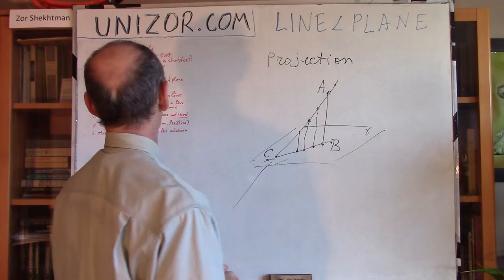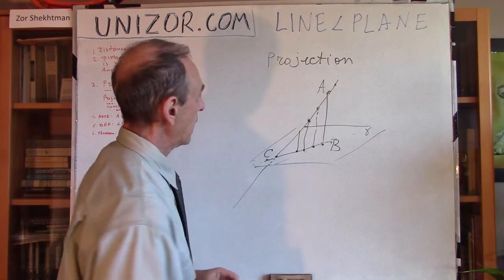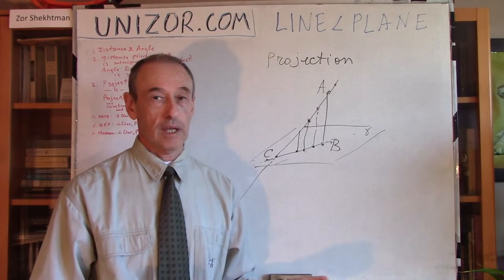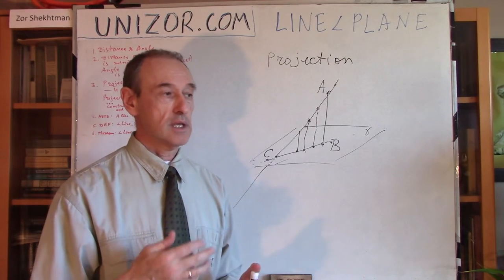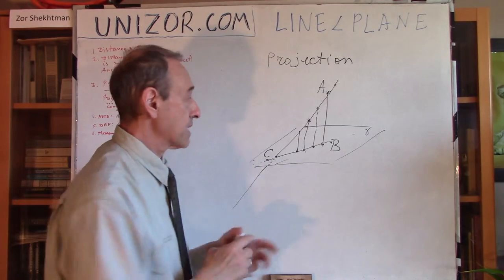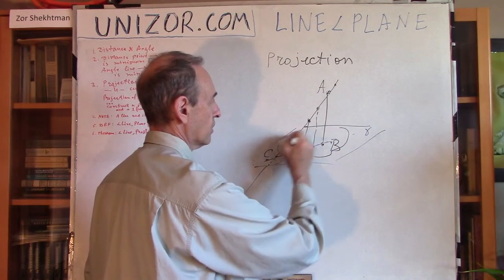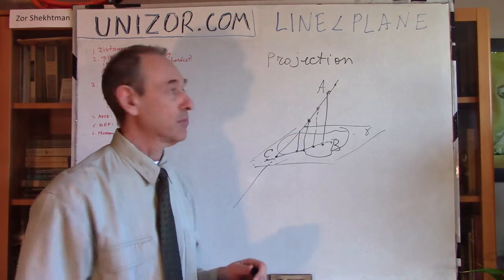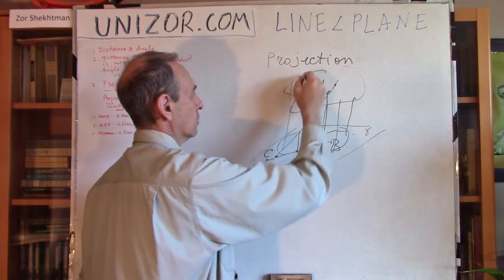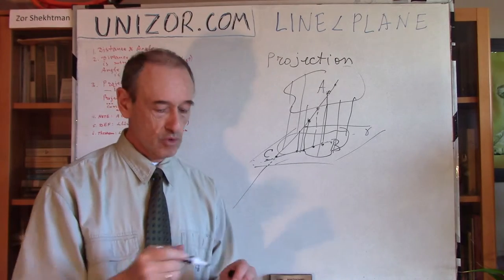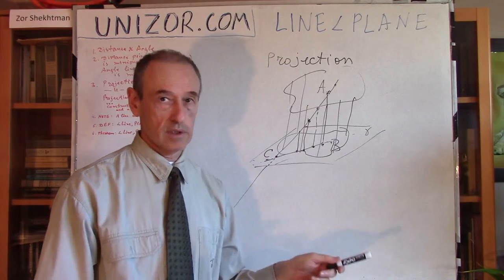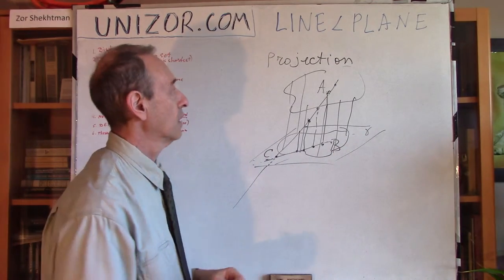By the way, the projection of any other curve is not necessarily a straight line — it's something on plane gamma formed by all the perpendiculars. That's why I suggested the projection of the line is something on gamma, which happens to be a straight line.